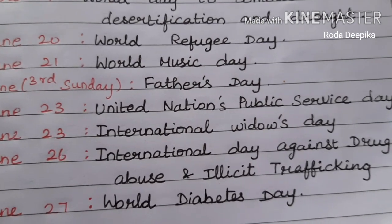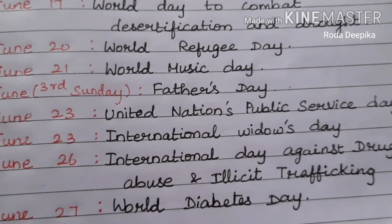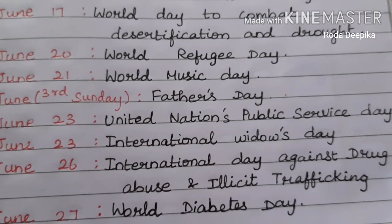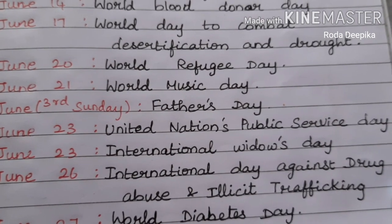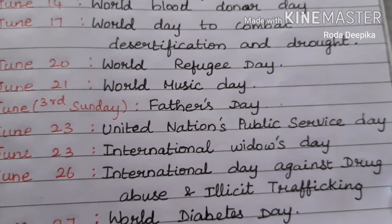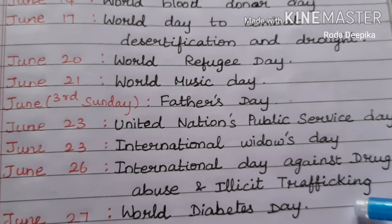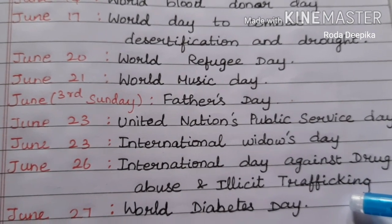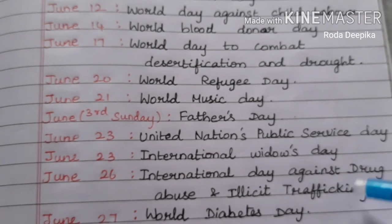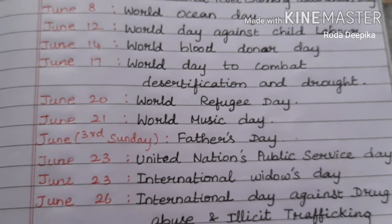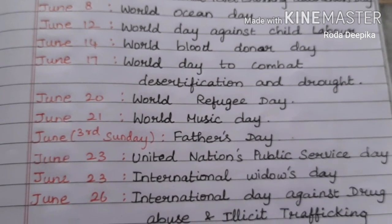June 23: International Widows Day. June 26: International Day Against Drug Abuse and Illicit Trafficking. June 27: World Diabetes Day. These are the important days in June month. In the next video, we will see from July month.